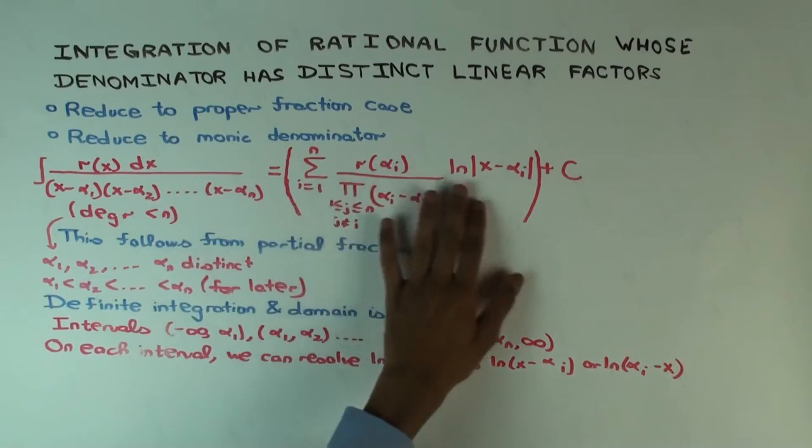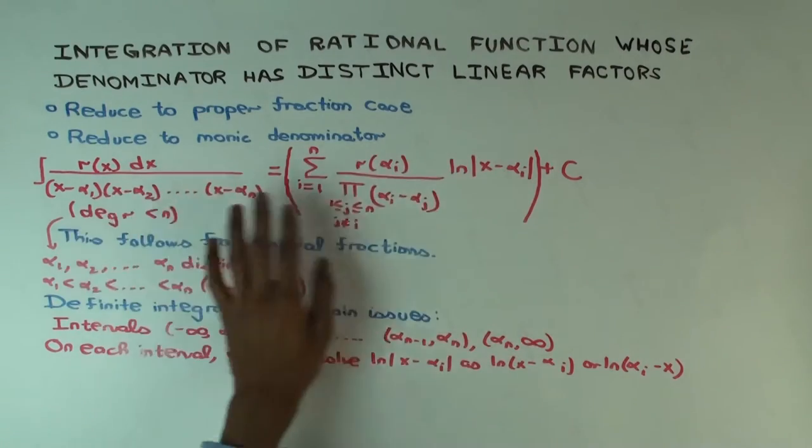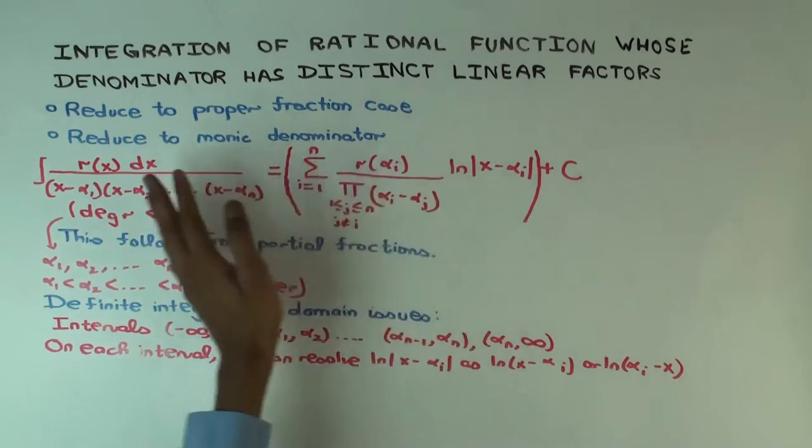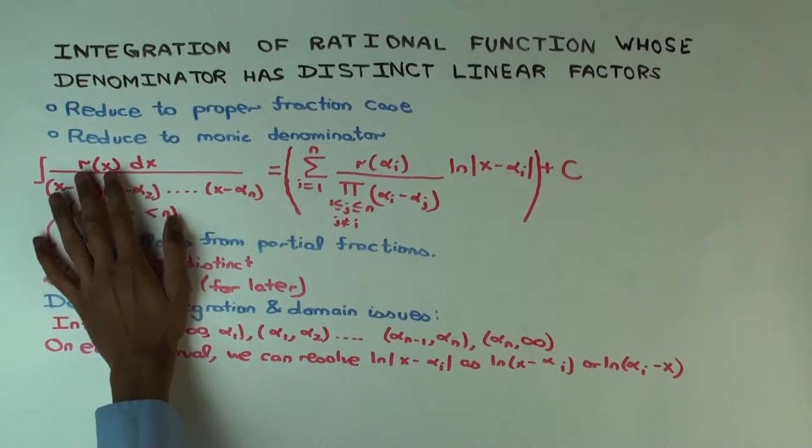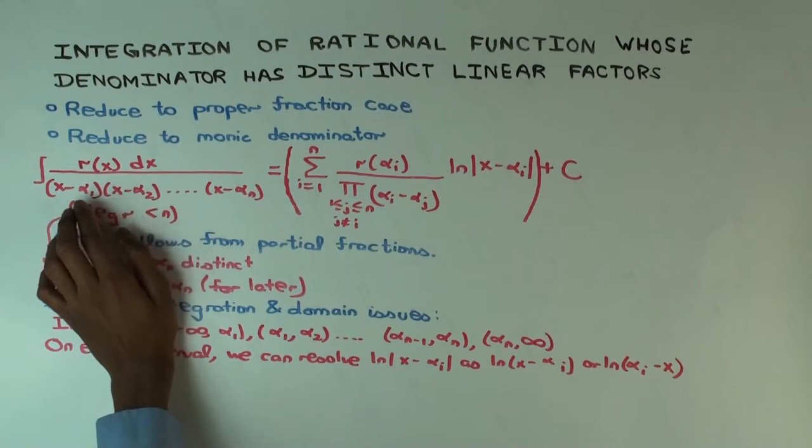If it were, then that term wouldn't appear here—this would be zero. So basically, this is in reduced form: no common factors between numerator and denominator.